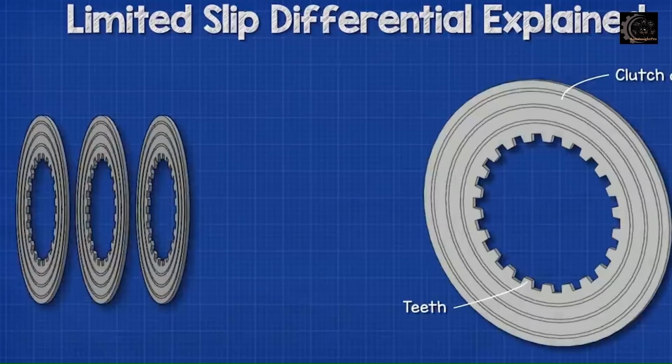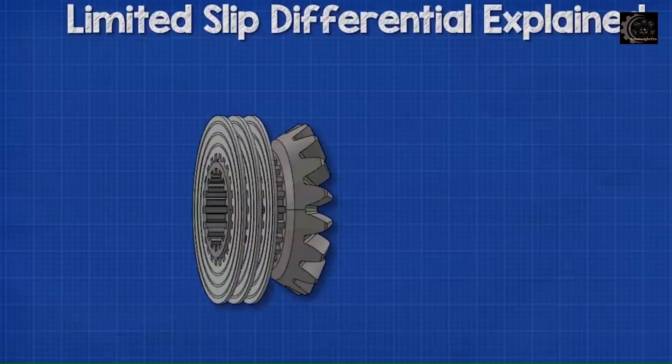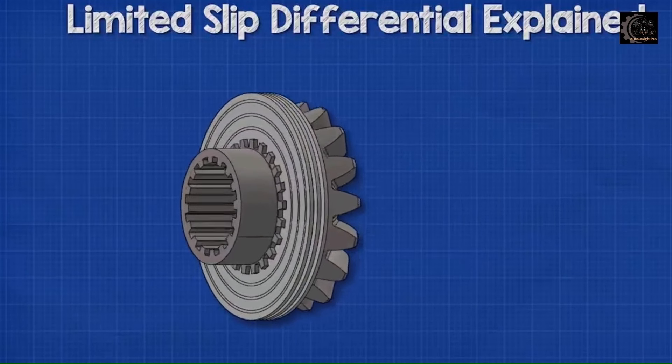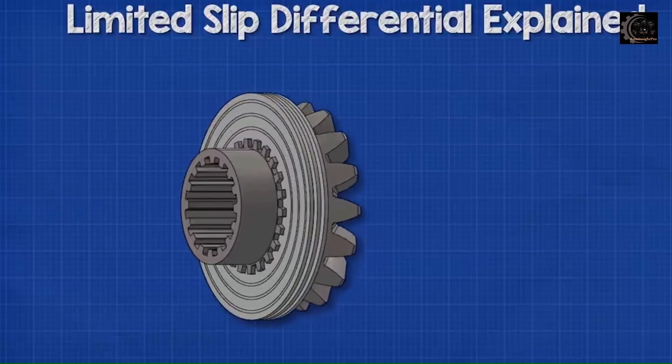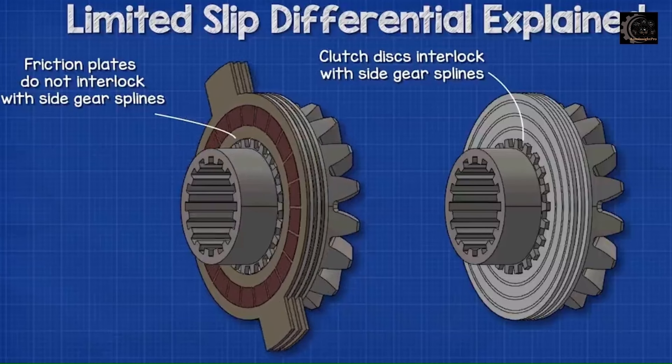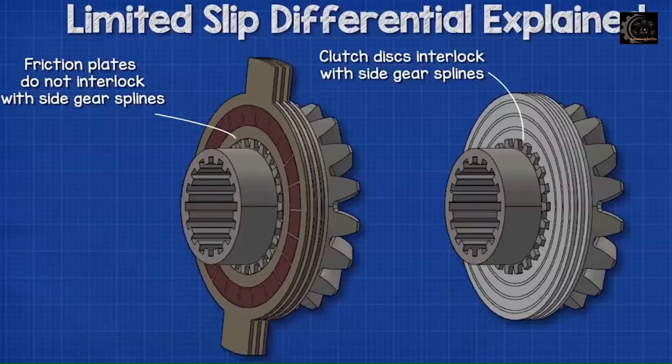The clutch discs are sheets of metal with teeth around the inner edge. These will slot into the splines of the side gears, interlocking the two together. When the side gear rotates, the clutch disc rotates also. However, the clutch friction plates do not interlock with the splines of the side gears, and so they will rotate around it. These two discs are stacked alternatively to form the clutch pack on each side.